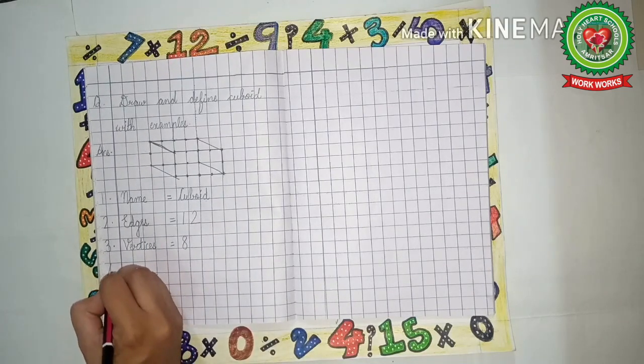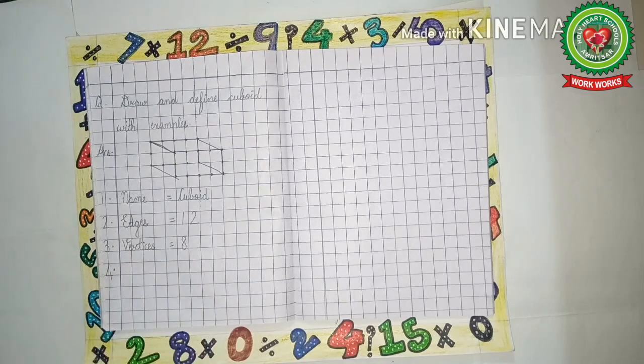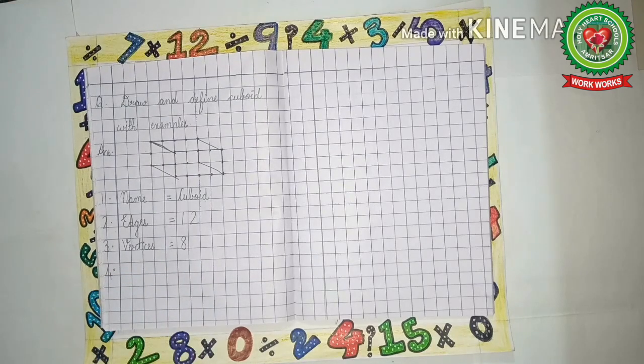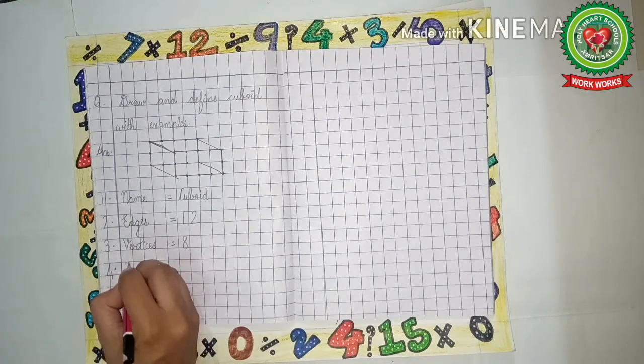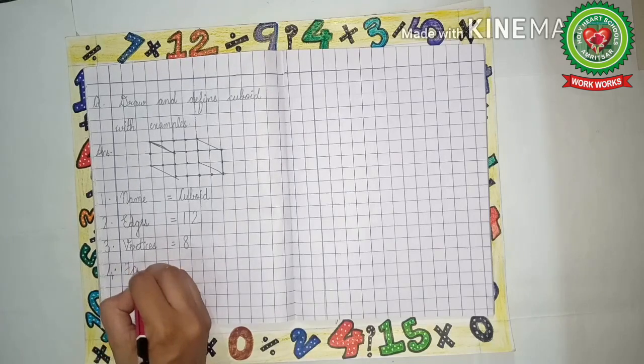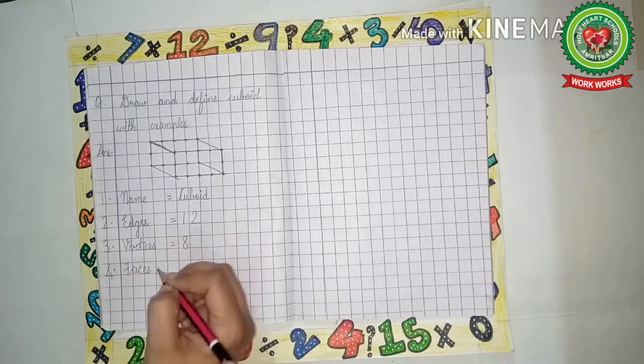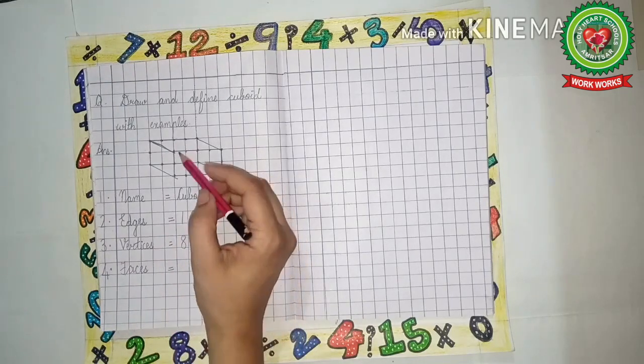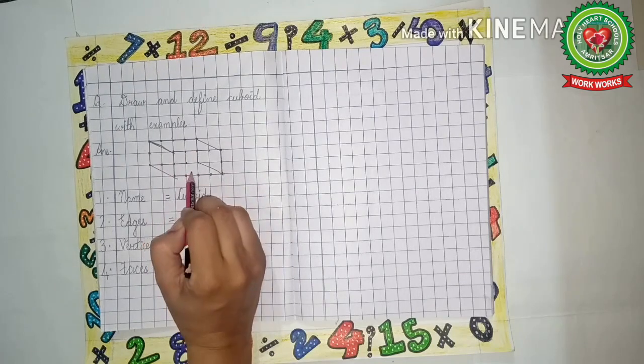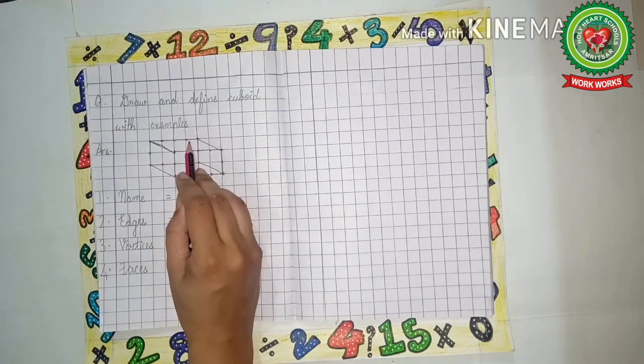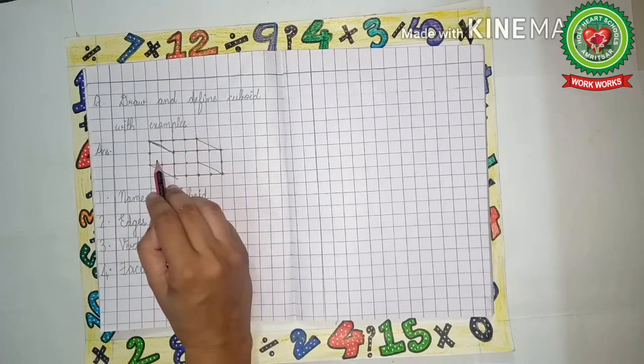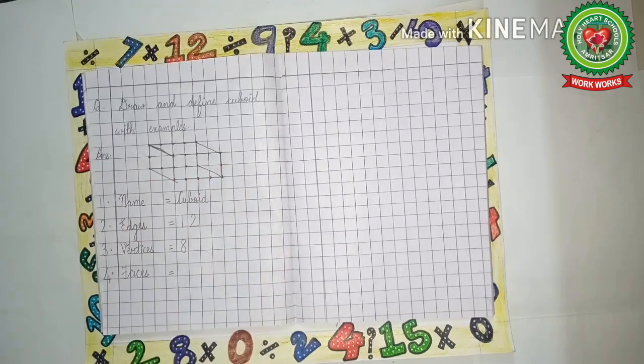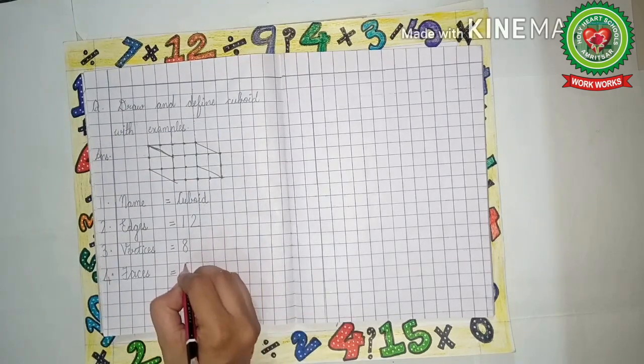Leave one line. Four dot: Faces—F-A-C-E-S. Now let's count the faces—one, two, three, four, five, six. Six faces are there.